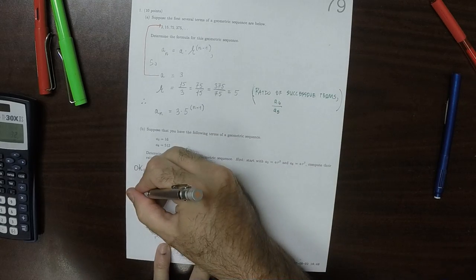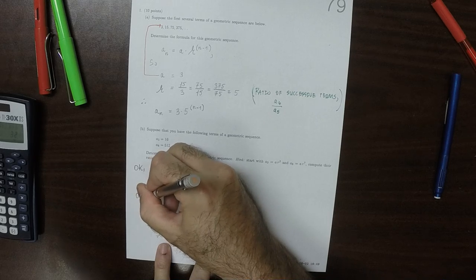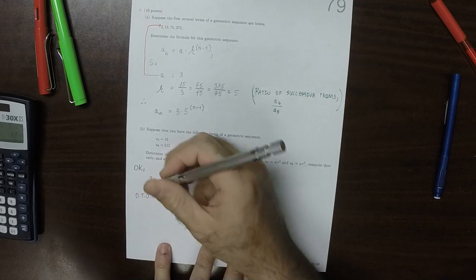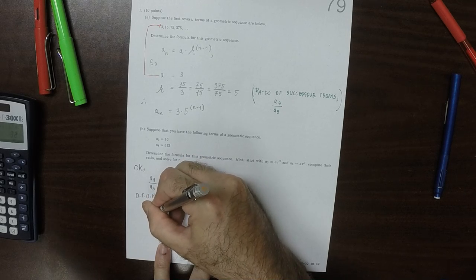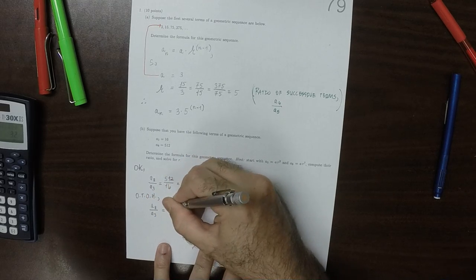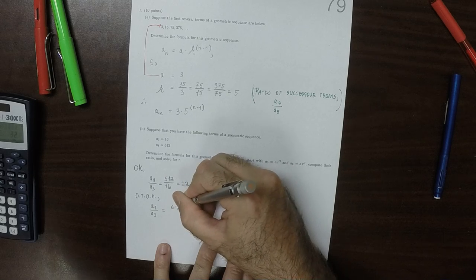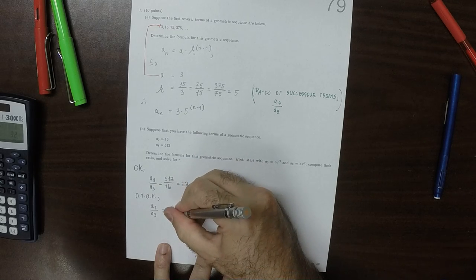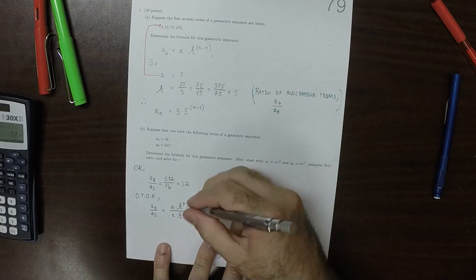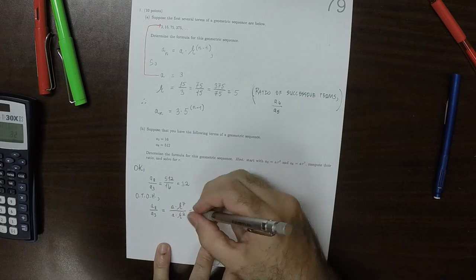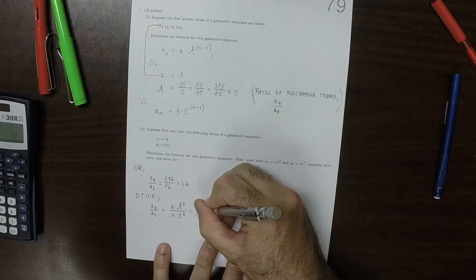And on the other hand, a_8 divided by a_3, well that's a multiplied by r to exponent 7 divided by a multiplied by r to exponent 2. Canceling the a's and canceling the r's, this is r to the 5.